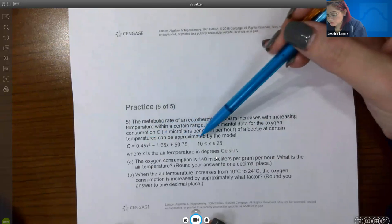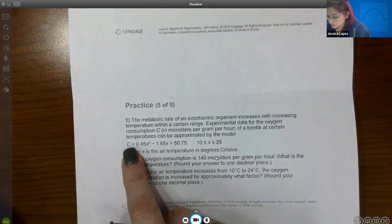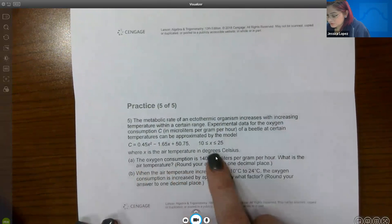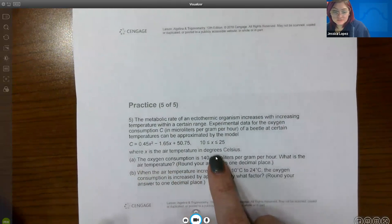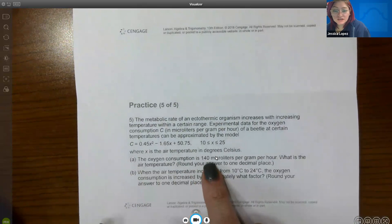can be approximated by the model here. Okay, so C is the consumption, oxygen consumption, and X is the air temperature in degrees Celsius. Okay, so question A says the oxygen consumption is 140 microliters per gram per hour. What is the air temperature?